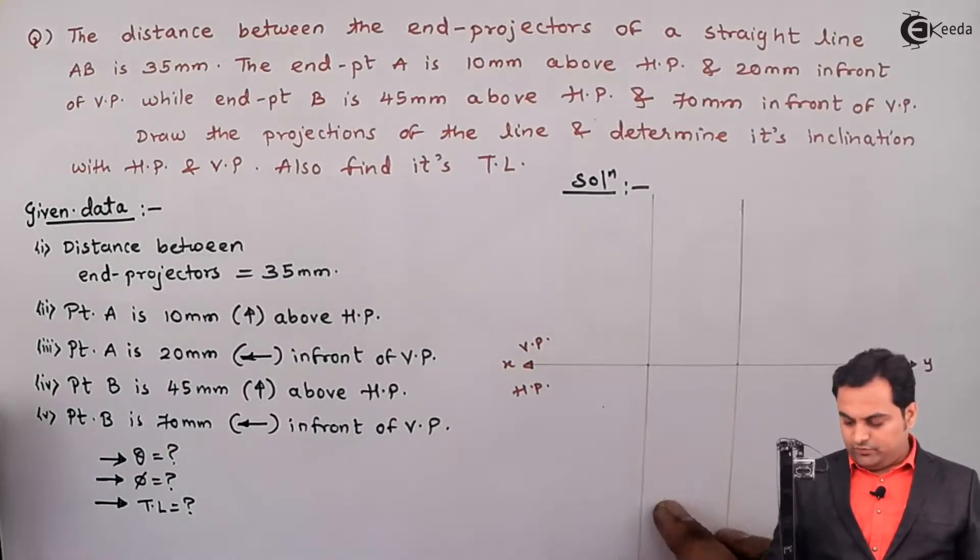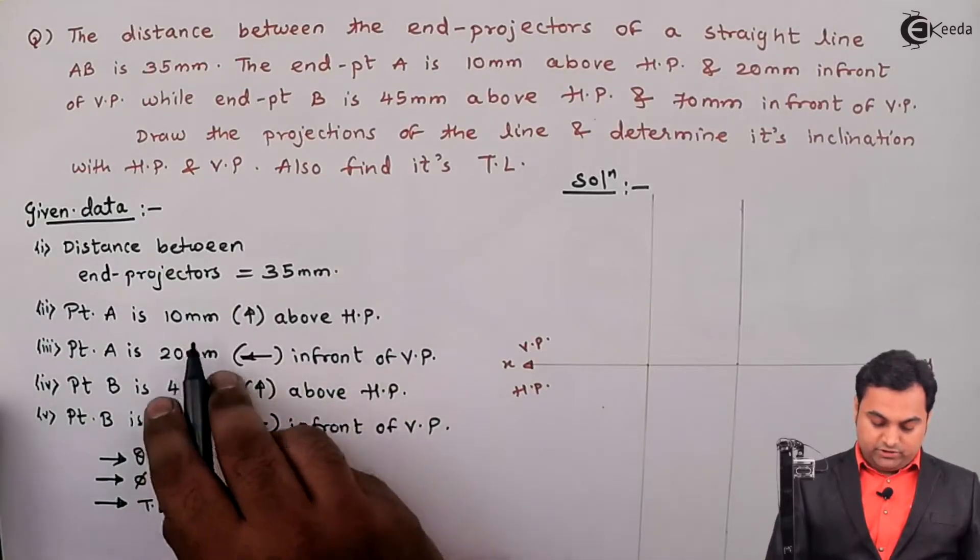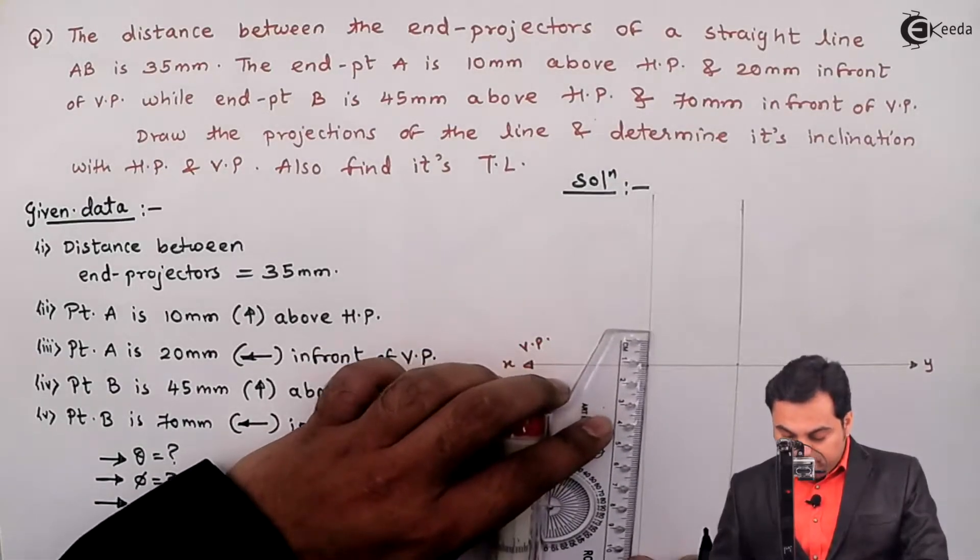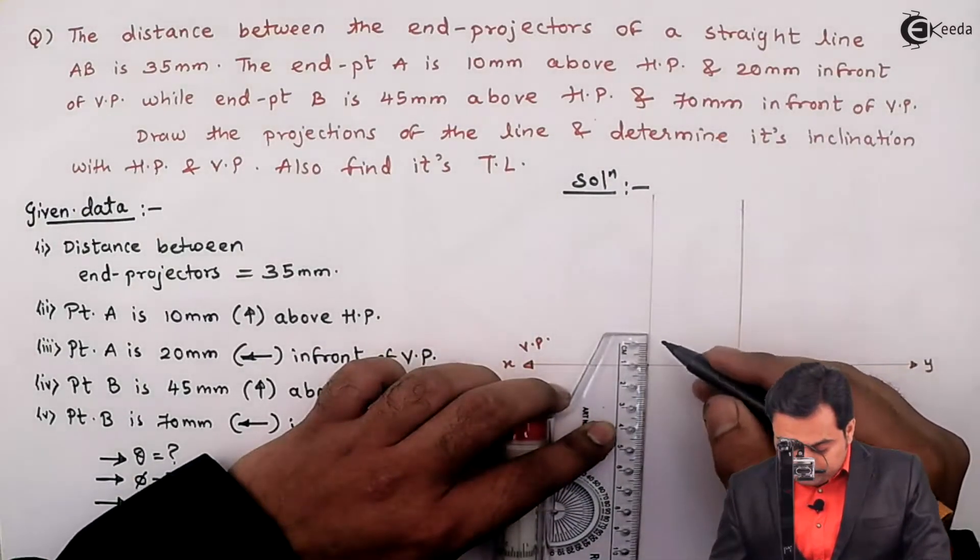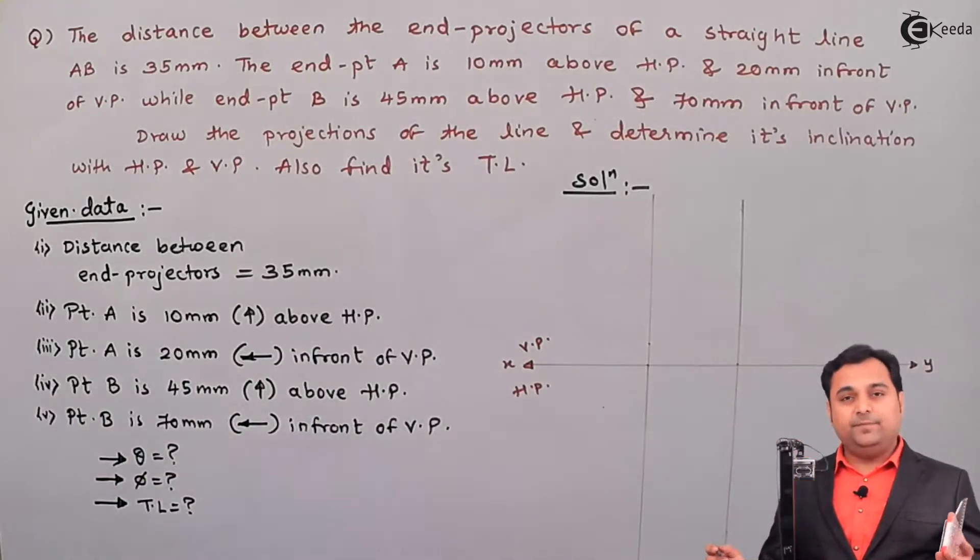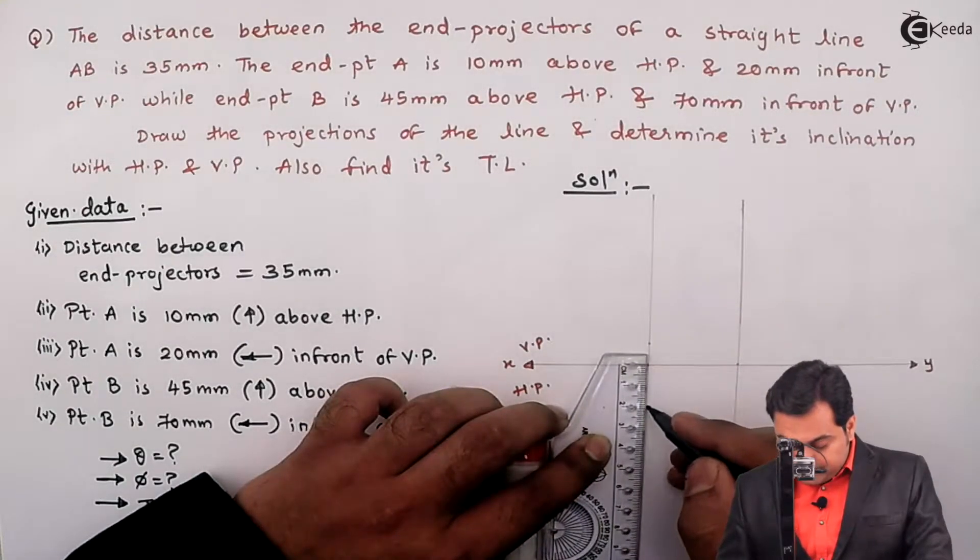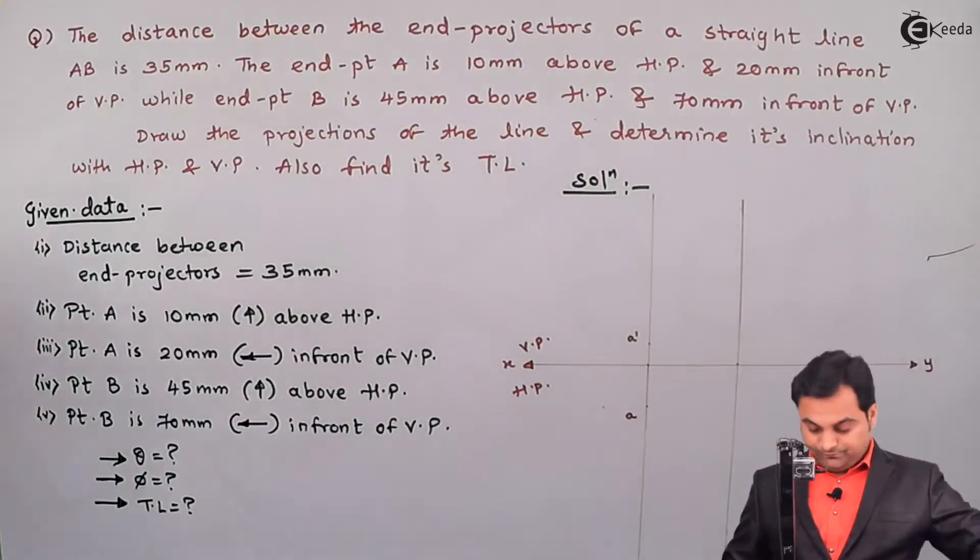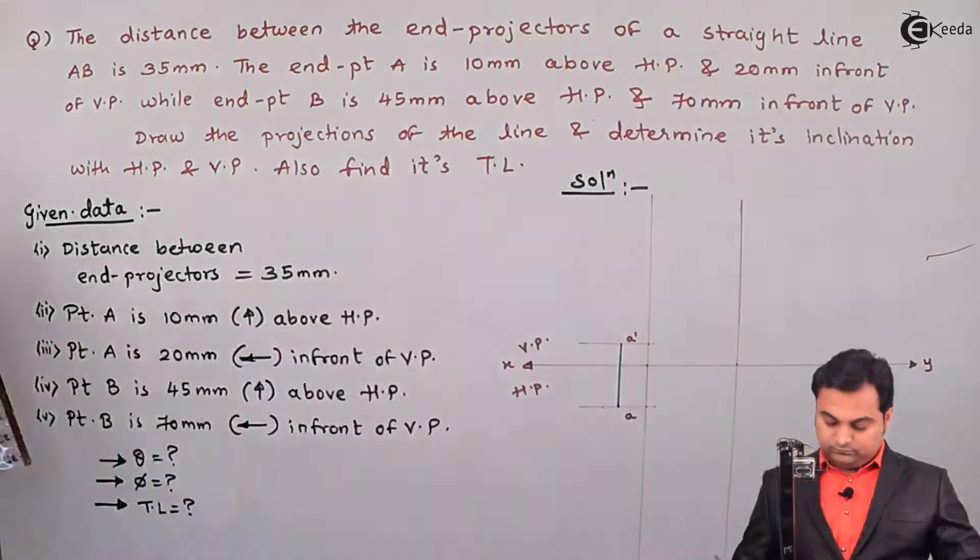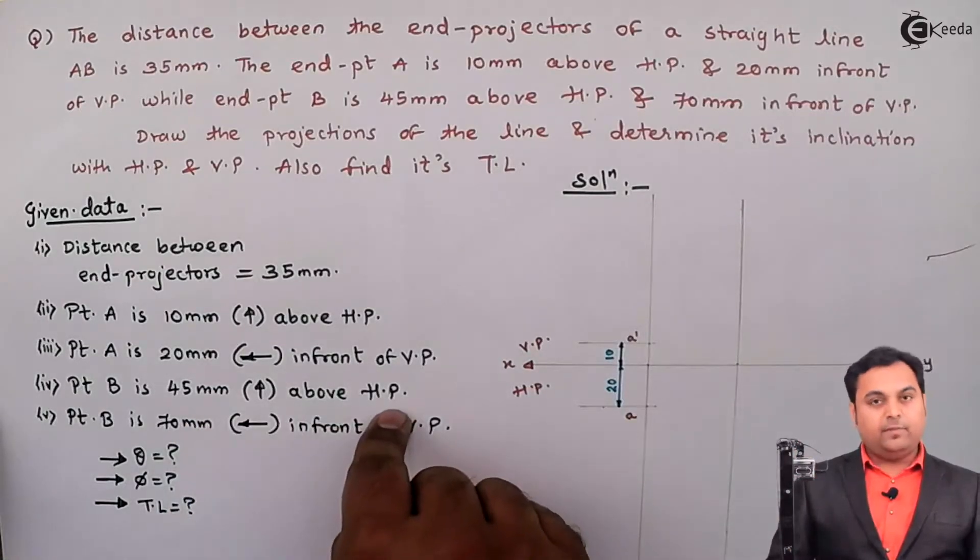Then I'll mark point A first - 10 mm above HP, 20 mm in front of VP. So point A will be here. 10 mm above HP is seen in VP, 20 mm in front of VP is seen in HP. Then point B is 45 mm above HP.